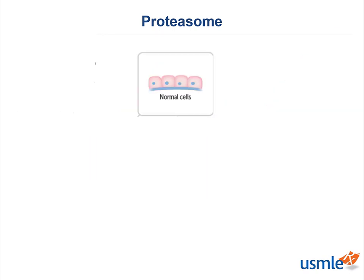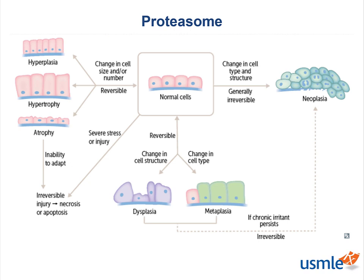Let's revisit some normal cells. Can you think of a reason where we would have a change in cell size or number, specifically decreased? Like in our flash case, it could be someone who hasn't been using his muscles, or it could be a situation where there is nerve damage, loss of blood supply, loss of hormonal stimulation, or even poor nutrition. That cellular adaptation is called atrophy. Part of it can be attributed to the degradation of cellular cytoskeletons by the ubiquitin proteasome pathway. Remember, there are a number of cellular adaptations you can review, and atrophy is just one of them.